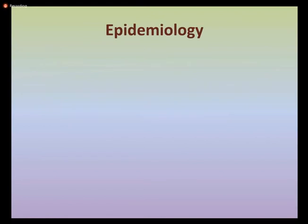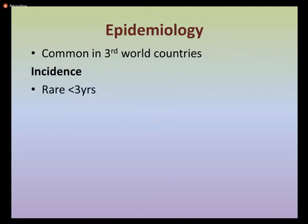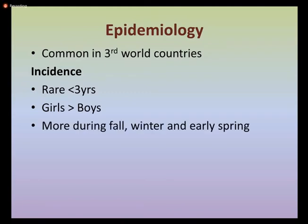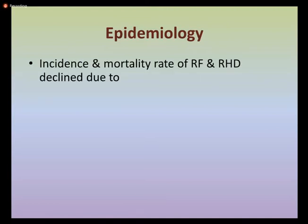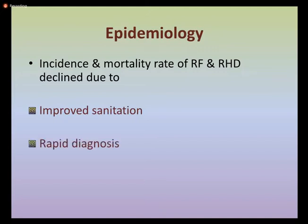The epidemiology of rheumatic fever: this infection is very common in third world countries and its incidence is rare below three years of age. Girls are more infected than boys, and incidence is higher during fall, winter, and early spring. Environmental risk factors include overcrowding, poor sanitation, and poverty. Incidence and mortality have declined due to improved sanitation, rapid diagnostic techniques, and earlier treatment availability, but it remains an important public health problem in developing countries.